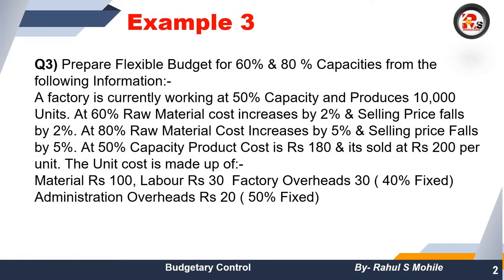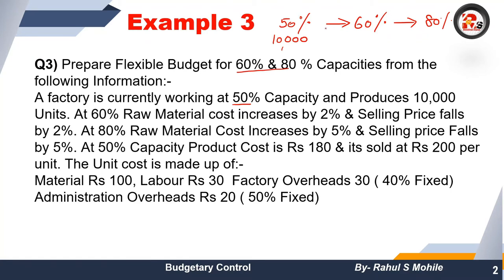Prepare a flexible budget for 60% and 80% capacity from the following information. A factory is currently working at 50% capacity — the question gives us 50% data, and we have to calculate 60% and 80%. At 50% capacity, the factory is producing 10,000 units, so we do a cross multiplication to find units at other capacities.